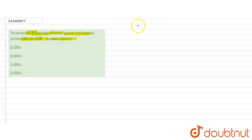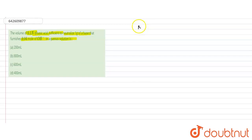We have 0.1 normal dibasic acid. We can solve this question using the concept of the law of equivalence, which states that N₁V₁ = N₂V₂, where N is normality and V is volume.